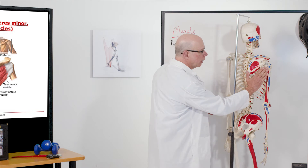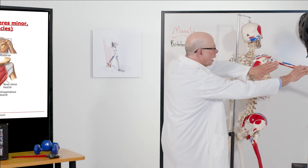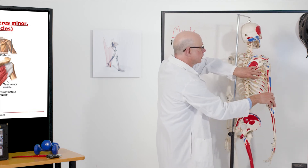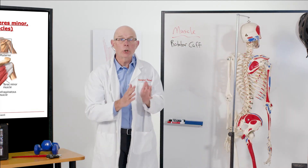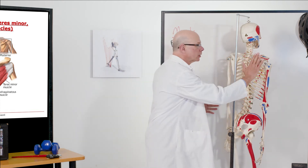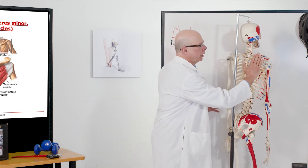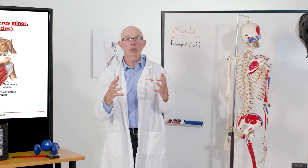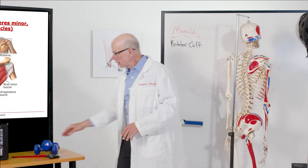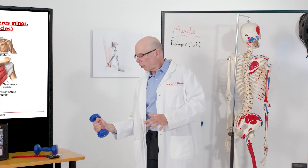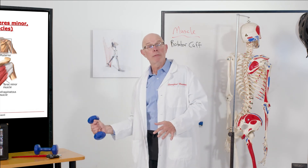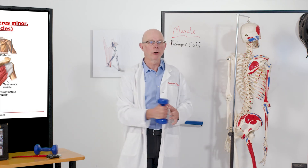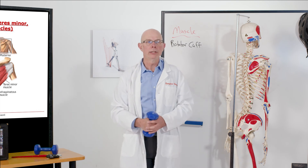Teres minor is a muscle located down here, and when it shortens it will abduct the humerus. From the back we can't see subscapularis — we'd have to peel the shoulder blade back and look deep. It's a big muscle and it does just the opposite of infraspinatus: it internally rotates the shoulder. It's a powerful internal rotator.